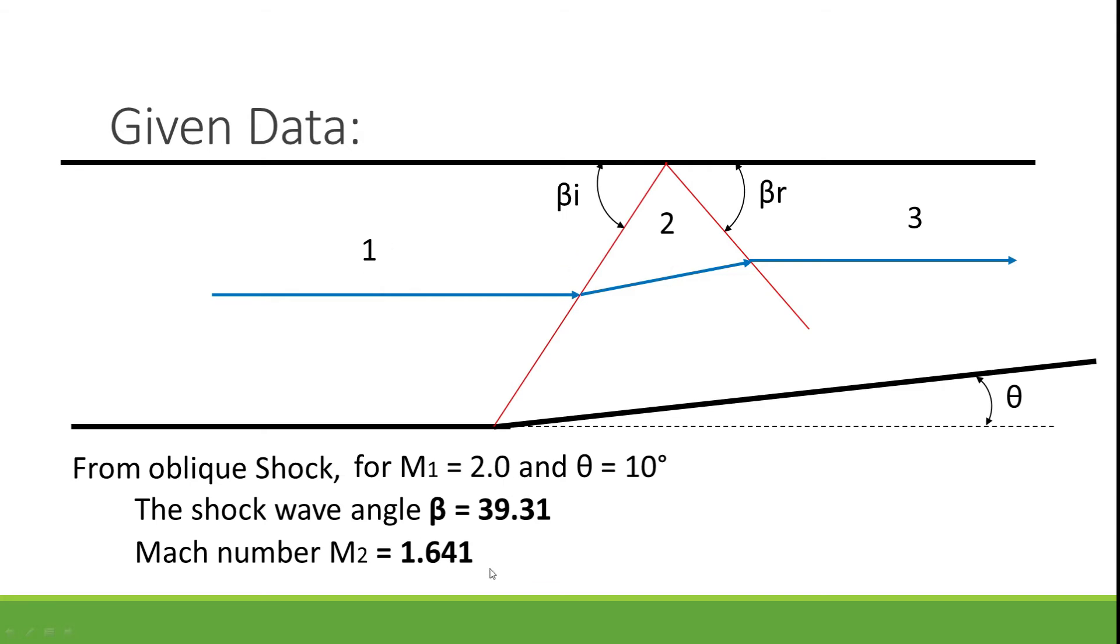And the Mach number is around 1.641. So now we got from the given data, we know region 1, and we got all the values of beta_i which is 39.31 and we also got the value for region 2.